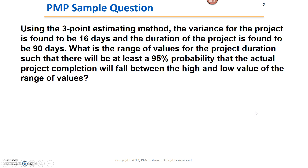Now let's apply this back to the sample question. They gave us the variance for the project as 16 days. I know variance is not a number I can use directly to come up with a range — I need the standard deviation. So the first thing I do is take the square root of 16 to get 4 days as my standard deviation. They've also already given me the duration of 90 days, so I don't need to calculate the weighted average myself. Since they asked for a 95% probability, I'll use two standard deviations added and subtracted from 90 days.